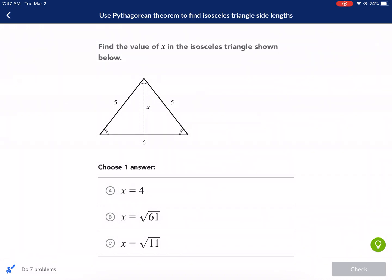Welcome everyone to a Khan Academy tutorial. We're doing Use Pythagorean Theorem to Find Isosceles Triangle Side Lengths. Long title, but I guess it makes it clear what we're doing.